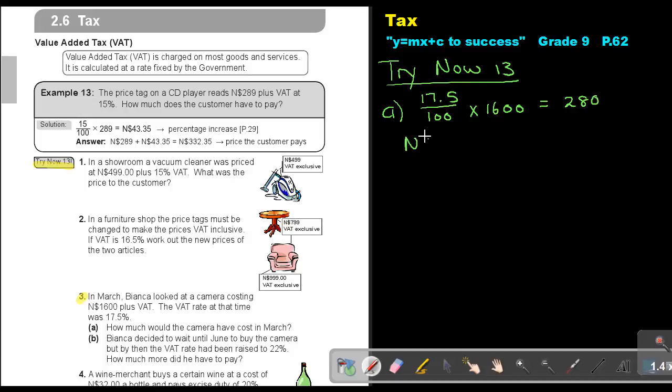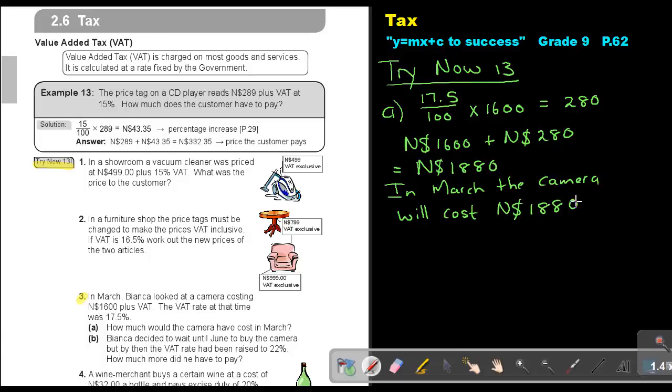So I'm adding that 1600 plus the 280 and that's giving me a sum total of 1, which is money. It's N$1880. So in March, the camera will cost N$1880.